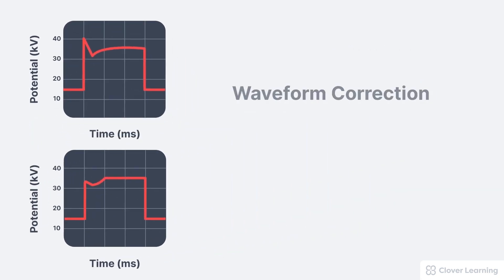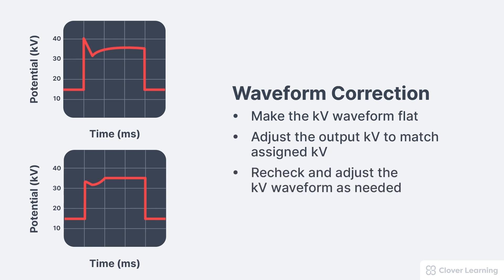An incorrect KV waveform must be corrected. The KV waveform at the generator affects the KV output at the tube. To fix this, we start by making sure the KV waveform is flat. Next, adjust the output KV to match the assigned KV. Finally, recheck the KV waveform and adjust as needed. Continue back and forth until both the waveform and the output are correct.